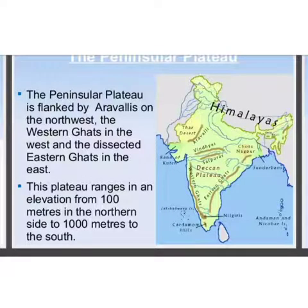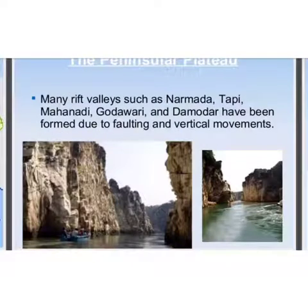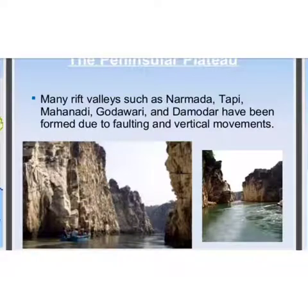The Peninsular Plateau is flanked by the Aravlis on the northwest, the Western Ghats in the west, and the Dissected Eastern Ghats in the east. This plateau ranges in elevation from 100m to 1000m to the south. Many rift valleys such as Narmada, Tapi, Mahanadi, Godavari, and Damodar have been formed due to faulting and vertical movements.